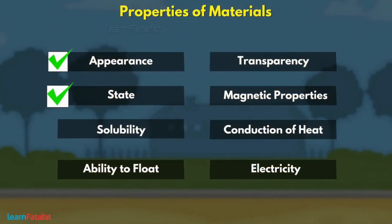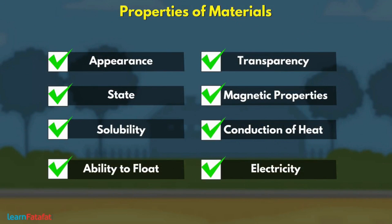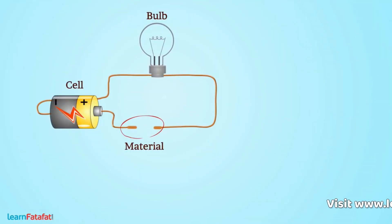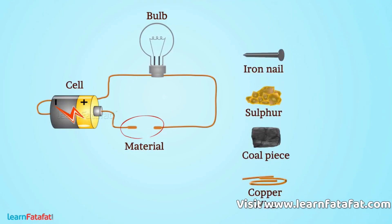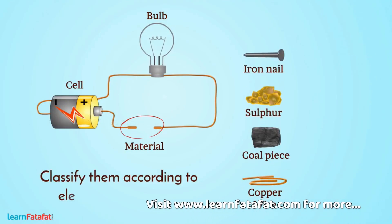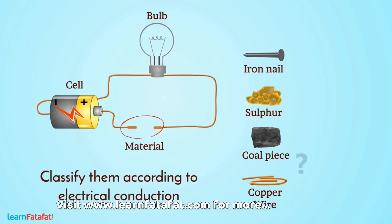We can use any property to classify the material. For example, here are some materials and we need to classify them according to electrical conduction. Can we do that? Yes. The answer is like this.